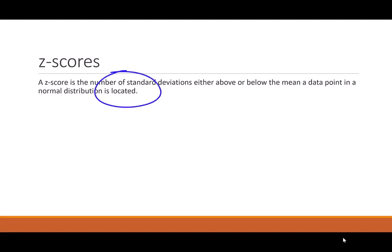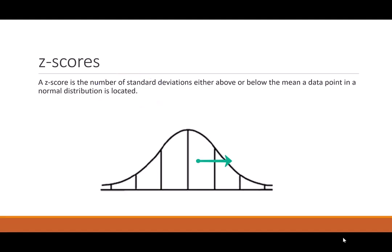So key word there is location. We're looking at where is our data point? Is it to the right of our mean? Is it to the left of the mean? Is it in the tail region? So how far away is it? Is it a very unusual score or is it a score that we would expect to get?